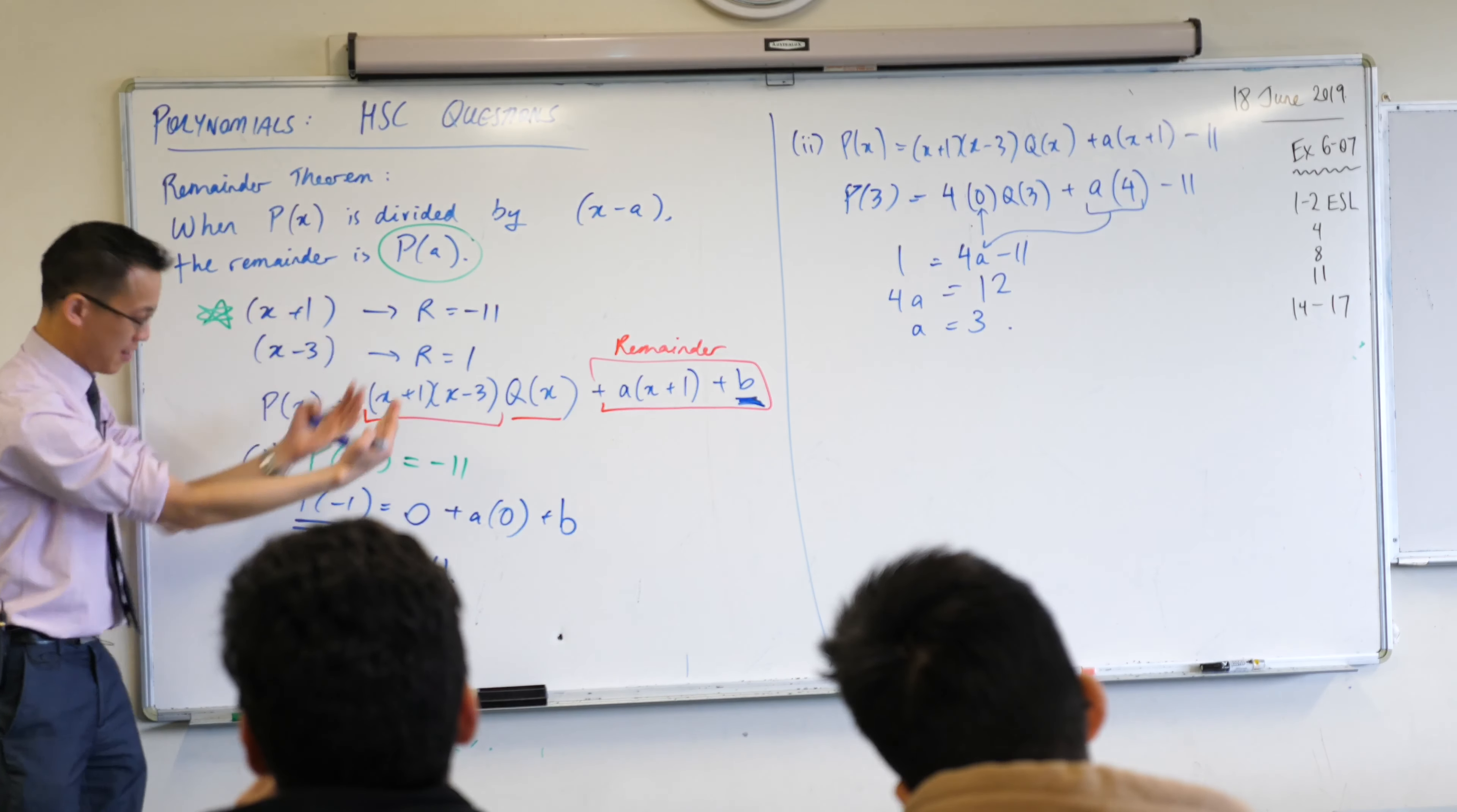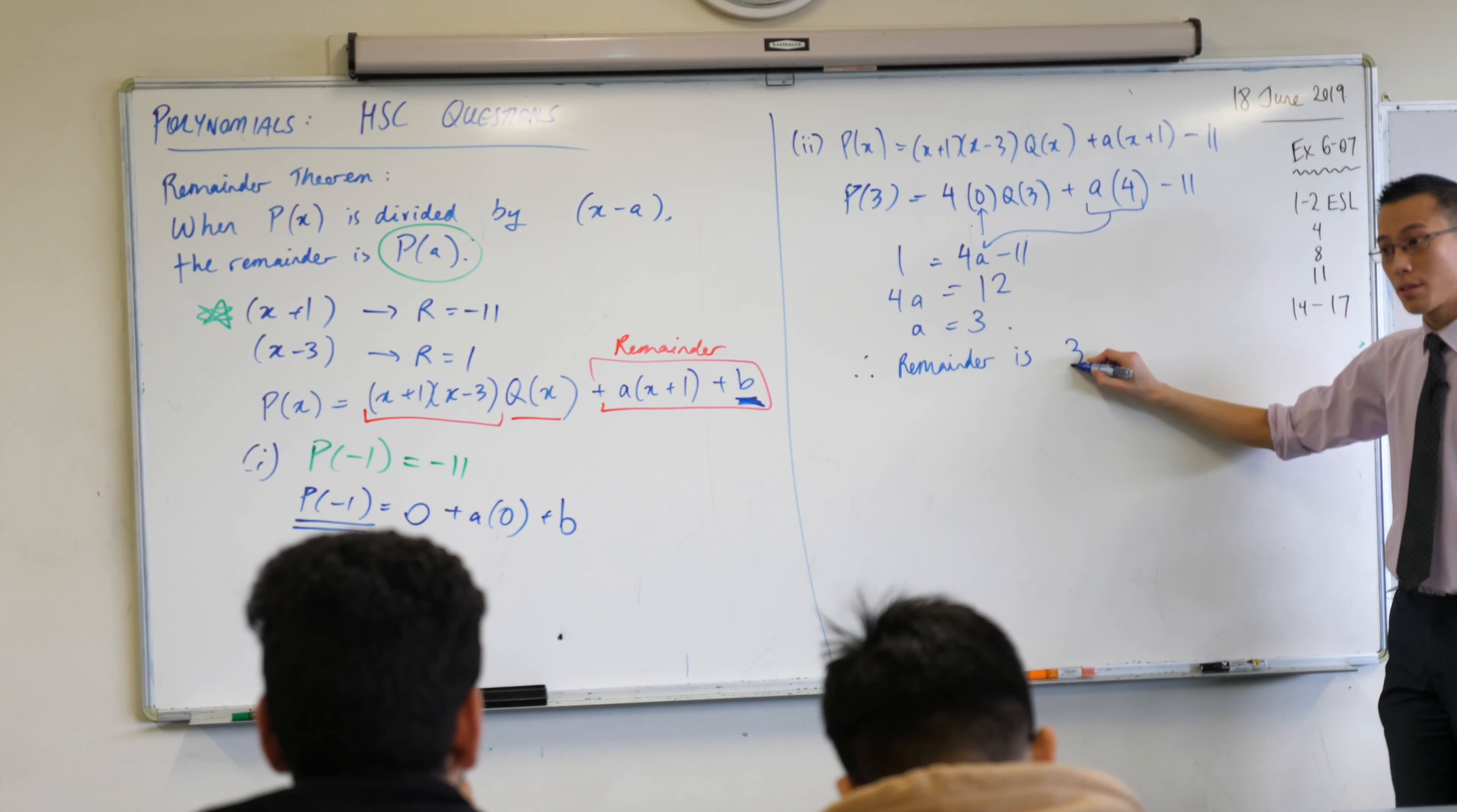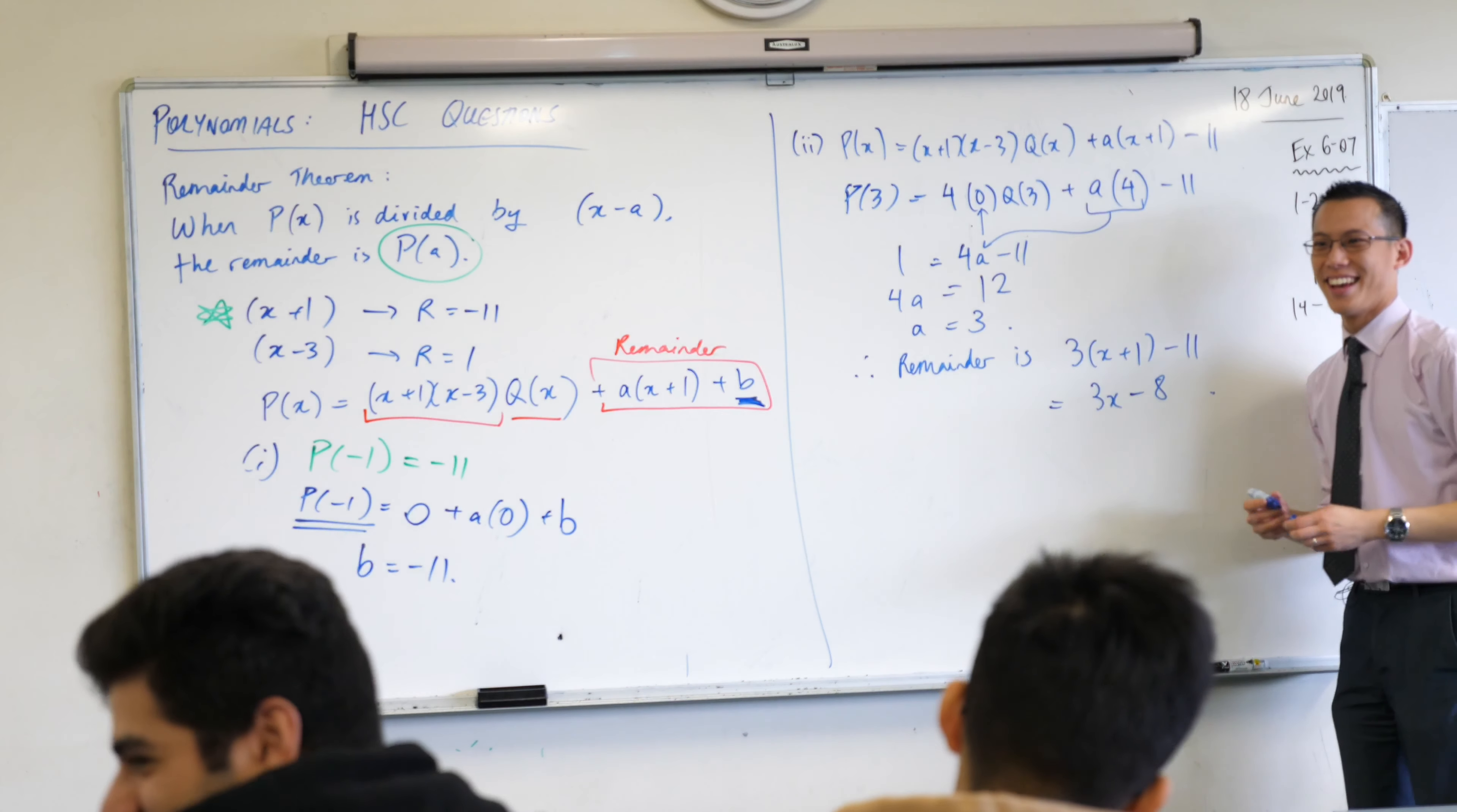Have I finished? No, but I'm so very close. The actual question says what is the remainder when you divide through by all of this. So a is not the answer, b is not the answer. I need to substitute 3 into here. So I would tie this up in a nice neat bow by saying therefore the remainder is 3(x+1) - that's what I know a is now - minus 11. I can simplify that: 3x + 3 - 11 = 3x - 8. We got there in the end!